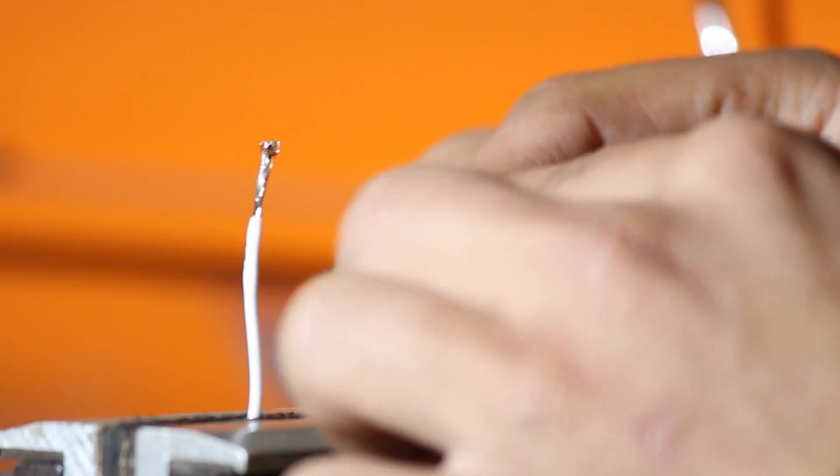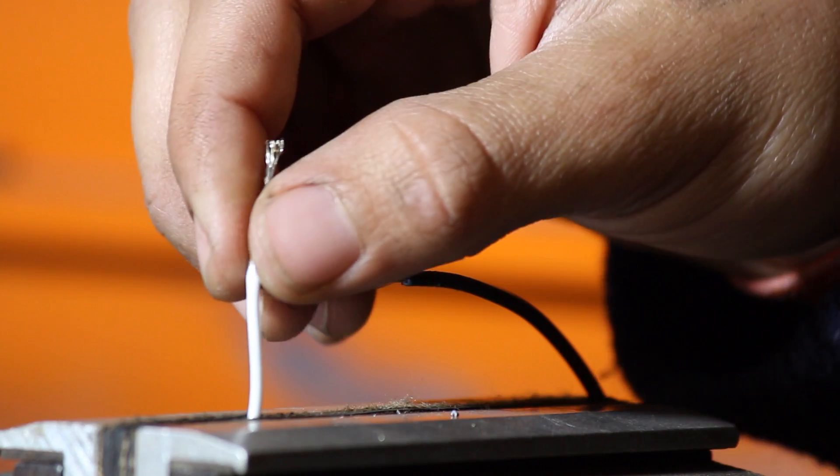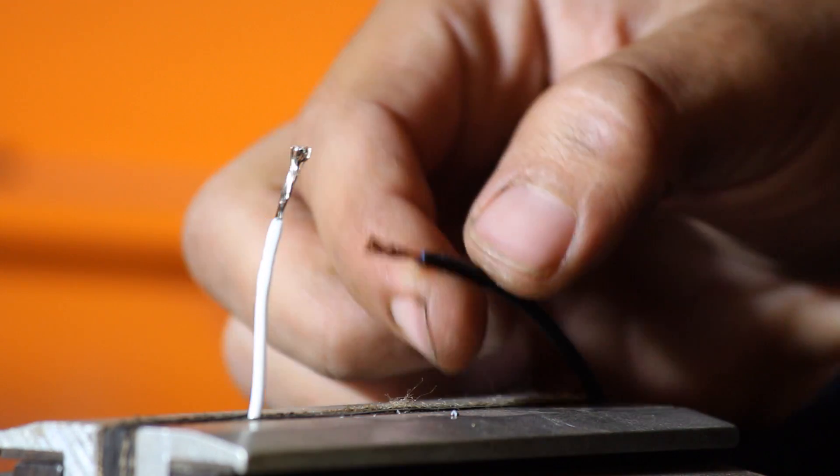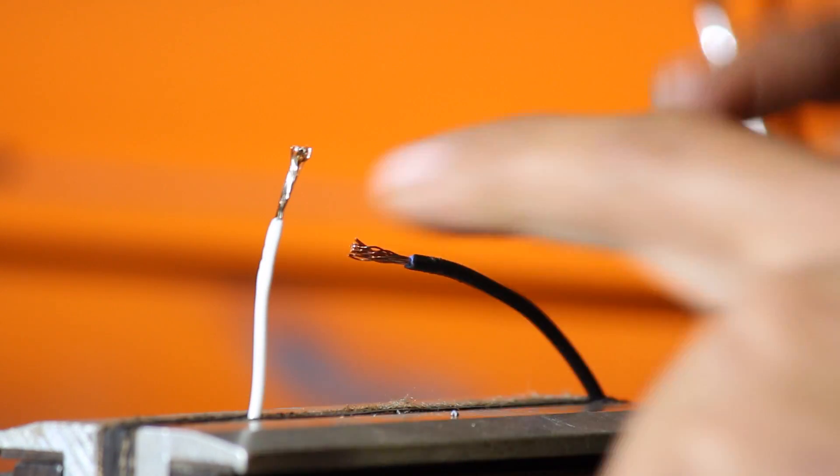Once you have your wires ready to be soldered, plug in your soldering iron and get it hot. In the meantime, set your wires up in a set of helping hands or a vise like I have here. This will help me perform the soldering job as the wires won't move around.